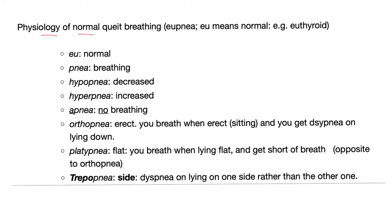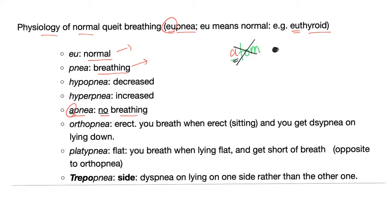Physiology of normal quiet breathing is called eupnea — 'eu' means normal, 'pnea' means breathing, like euthyroid. Apnea means no breathing — 'a' means no in Greek, as in 'atom' (atomos: cannot be cut down further). Hypopnea means decreased breathing; hyperpnea means increased breathing.